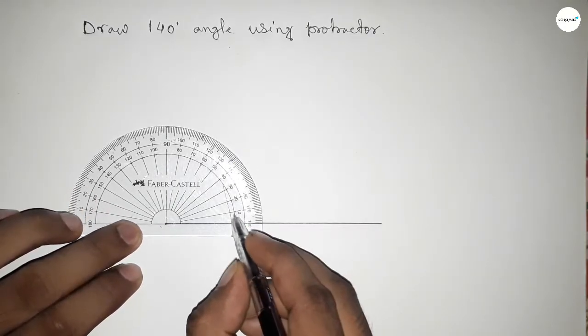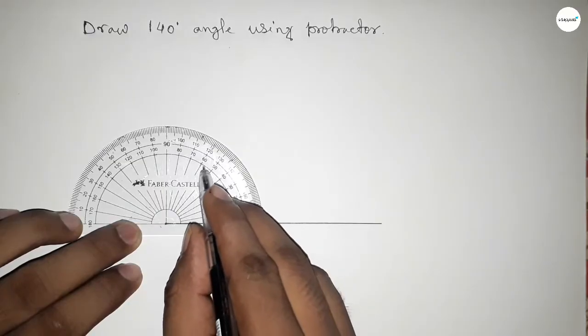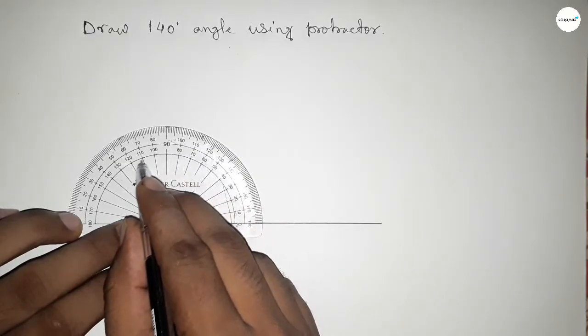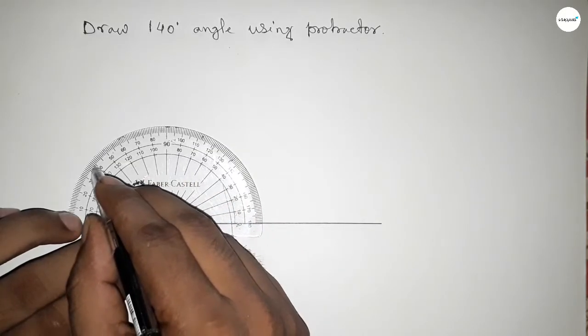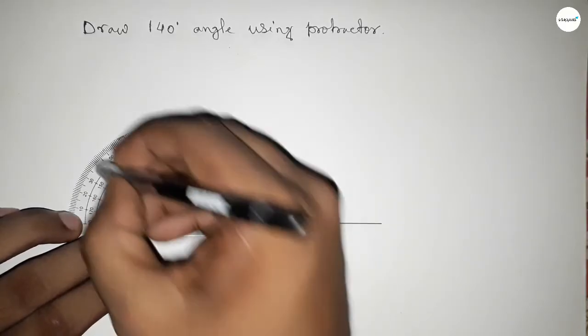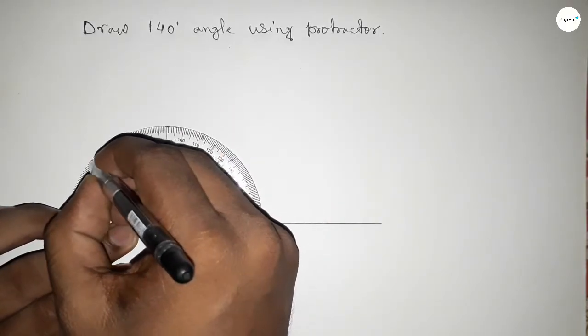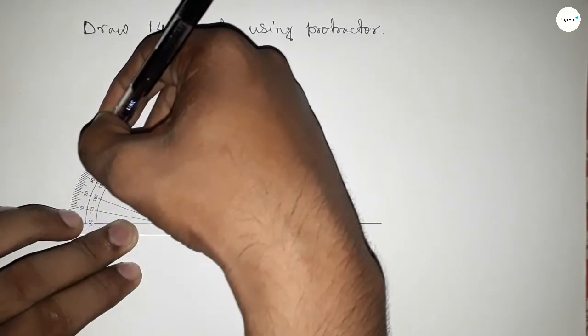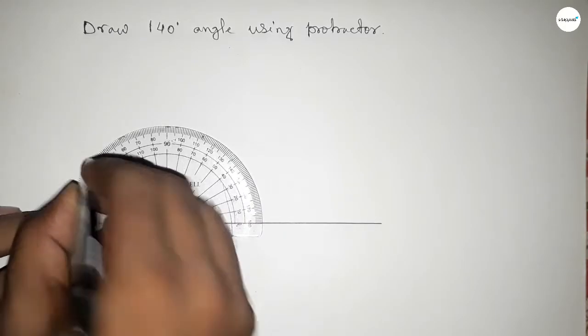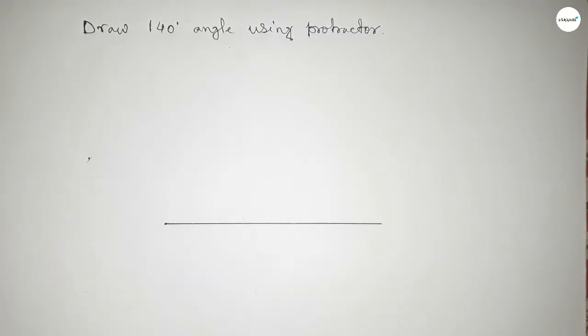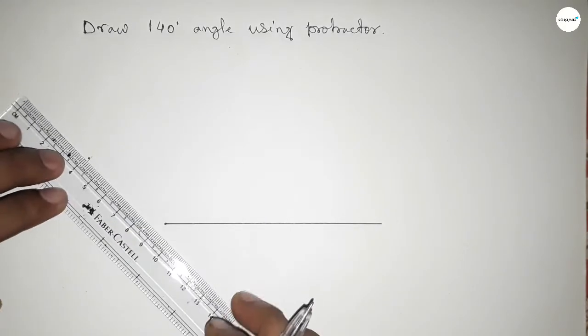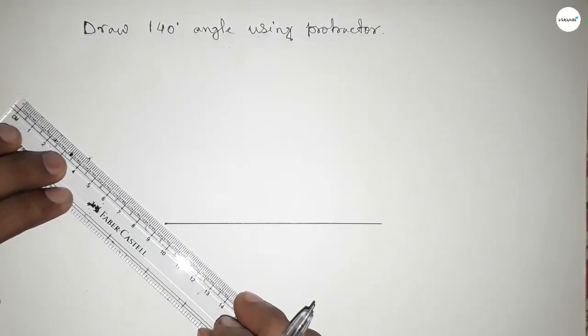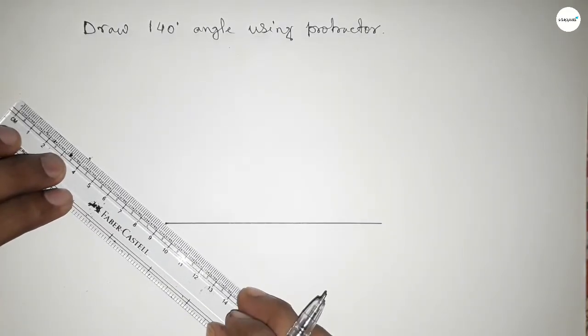Next, counting the angle. So this is 0, 10, 20, 30, 40... 90... this is 100, 40 degrees. So this is 140 degrees. Now joining this side to get 140-degree angle.